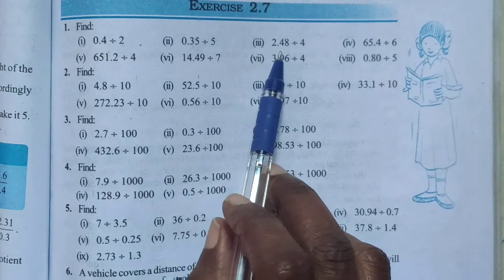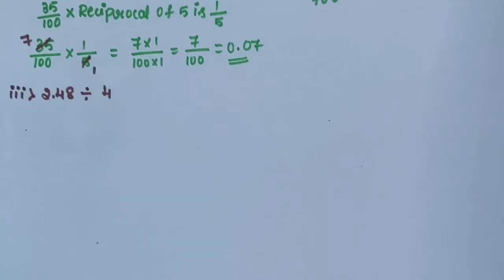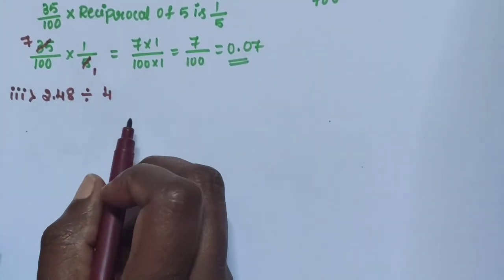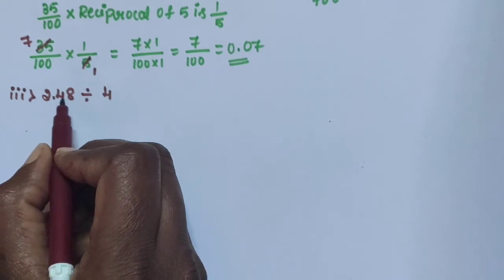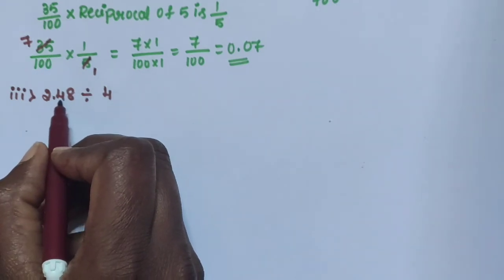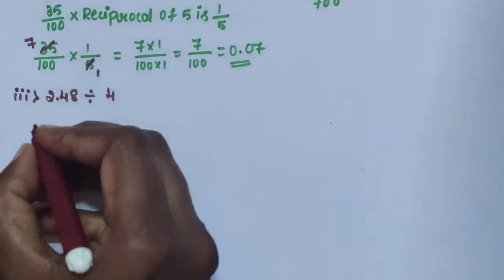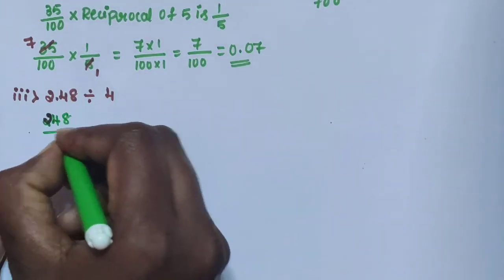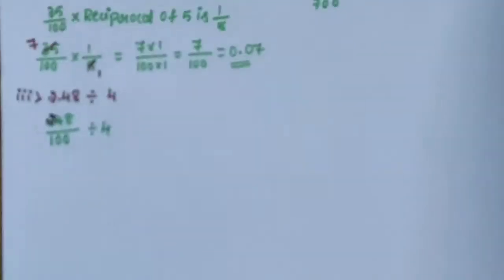Next, sub question 3: 2.48 is divided by 4. Using the same process, 2.48 — 4 is in the 10th place, 8 is in the 100th place, so divide by 100. Write as 248 divided by 100, then divide by 4.